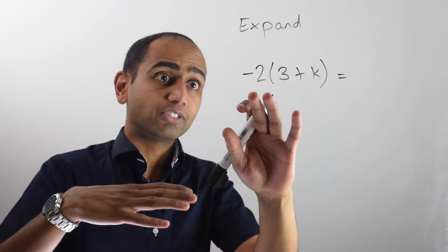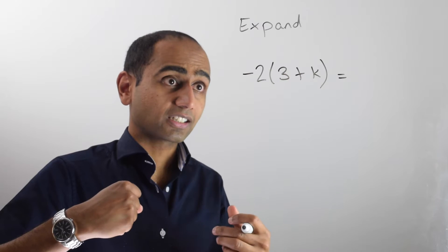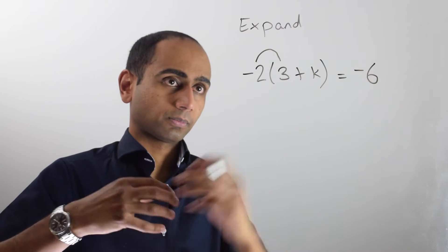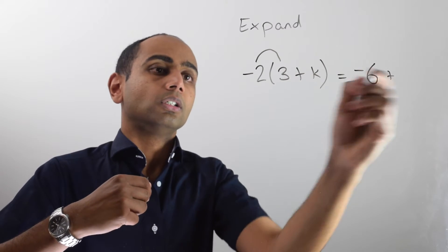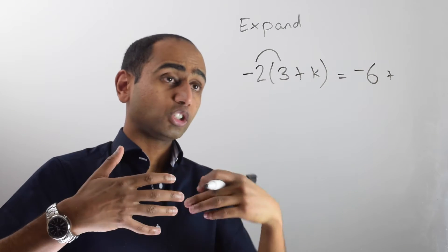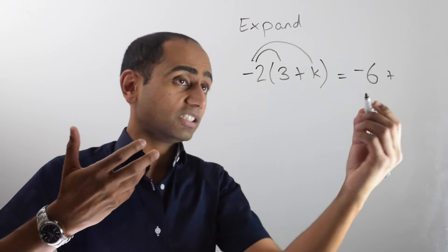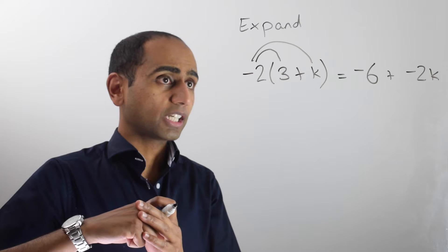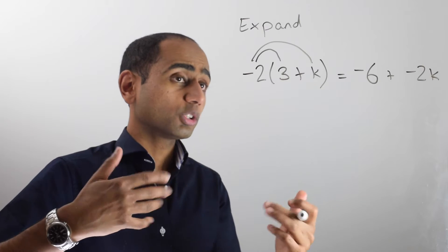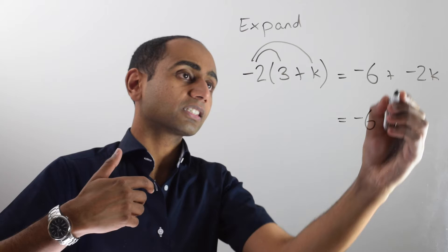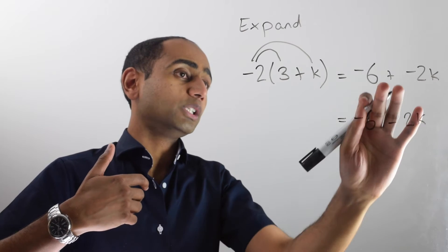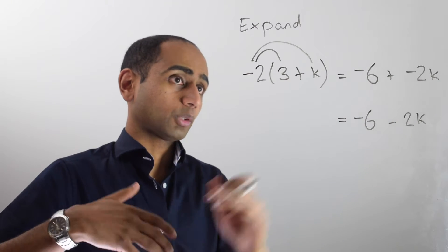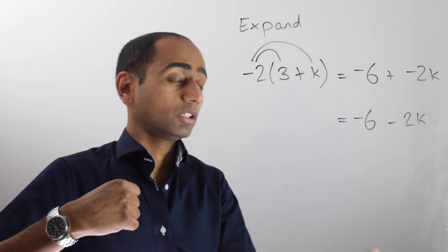In this example, I've got a negative number outside the bracket, but we're going to use the exact same method. Negative two times three is negative six. And then I'm going to add on negative two times k, and negative two times k is just negative two k. So I get an answer of negative six add negative two k. You might also be comfortable writing that as negative six take away two k, because when you add a negative number, it's the same as subtracting that number.